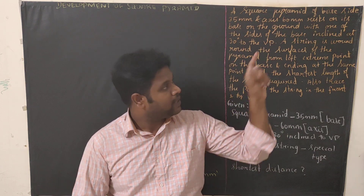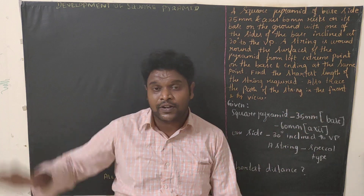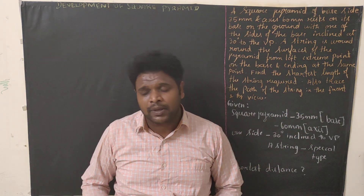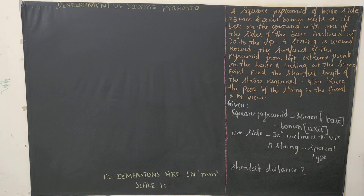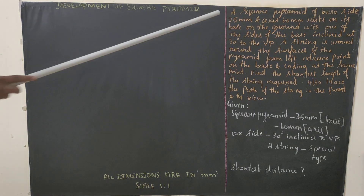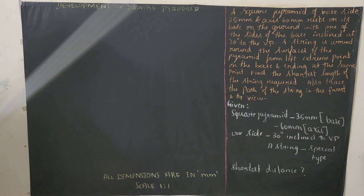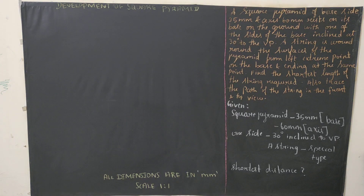Initially I'll be explaining the question, then I'll explain how to write the given data, then how to draw the diagram step by step. If you follow all the instructions step by step it will be very easy for you to solve the problem. The question gives a square pyramid of base 35mm.